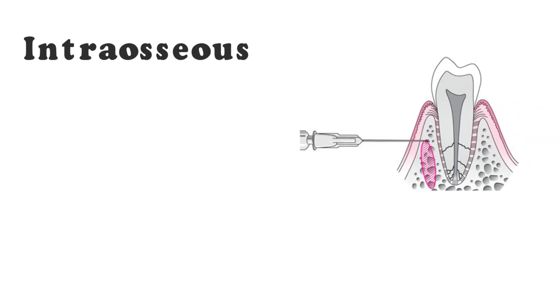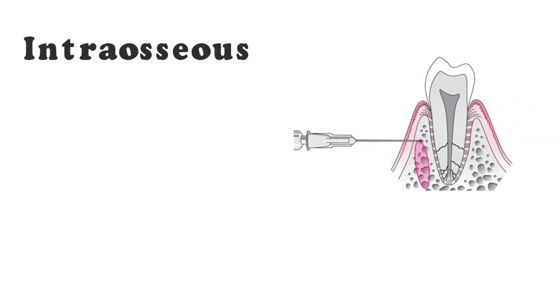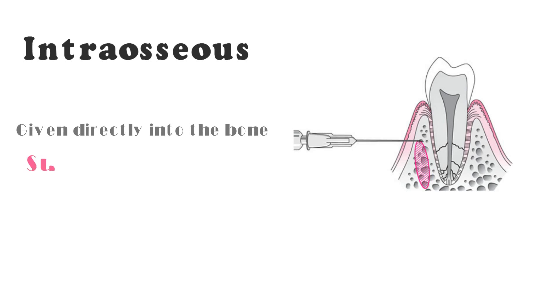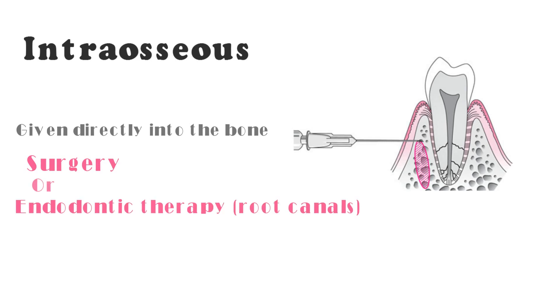Intraosseous injection is a delivery of local anesthetic given directly into the bony structure surrounding the tooth. It is used for more involved dental procedures such as surgery or endodontic therapy, including root canals.